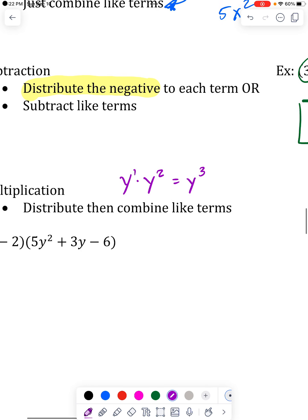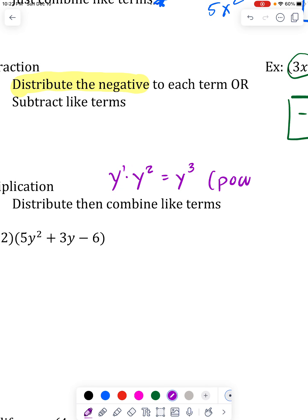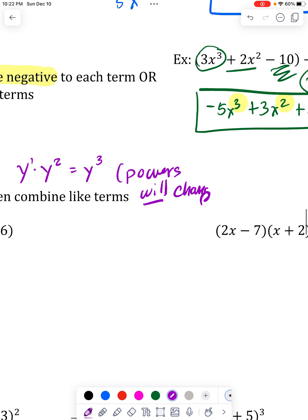So now the powers will change. And then when you go to combine like terms, they won't. That's really messy. But when you're multiplying, the powers will change. Keep in mind that in multiplication, they will get added to each other.